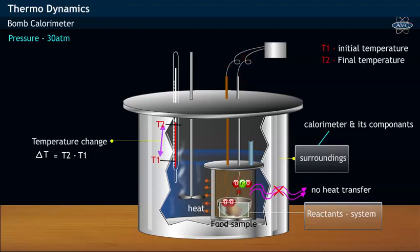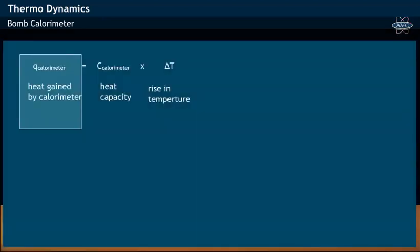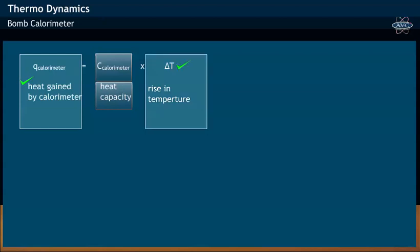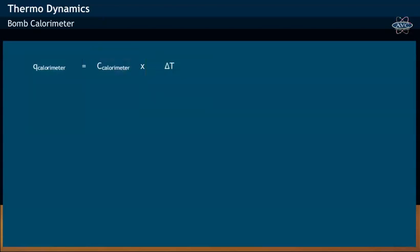The temperature change, referred to as ΔT, is related to the parts of the calorimeter. This may be equated by the following equation: Q_calorimeter, or heat gained by the calorimeter, equals the product of heat capacity (C_calorimeter) and rise in temperature (ΔT). By rearranging the equation, the heat capacity of the calorimeter is given by Q divided by ΔT.